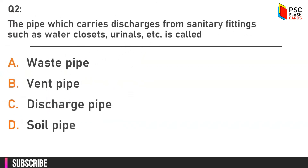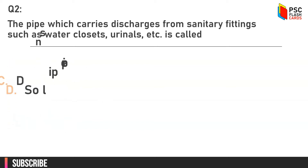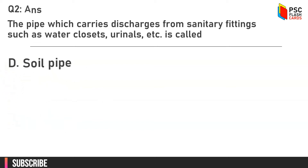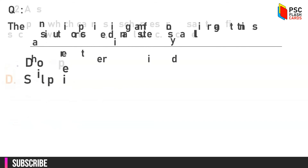Question number two: the pipe which carries discharges from sanitary fittings such as water closets, urinals, etc. is called — option A: waste pipe, option B: vent pipe, option C: discharge pipe, option D: soil pipe. The answer is option D, soil pipe.